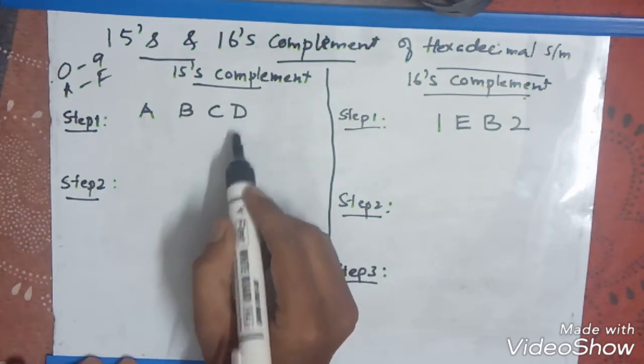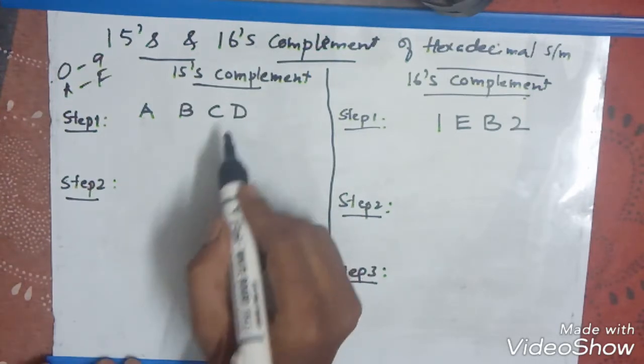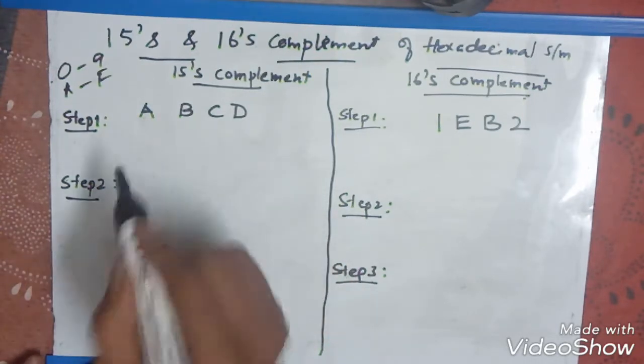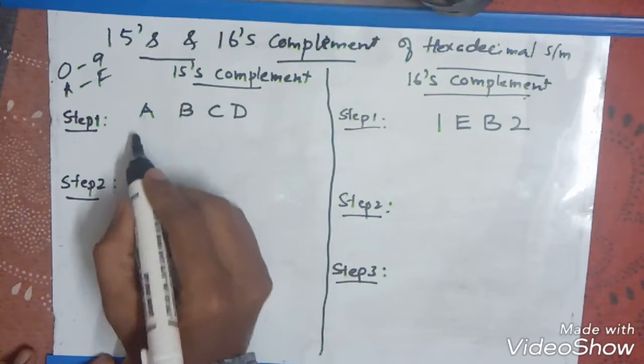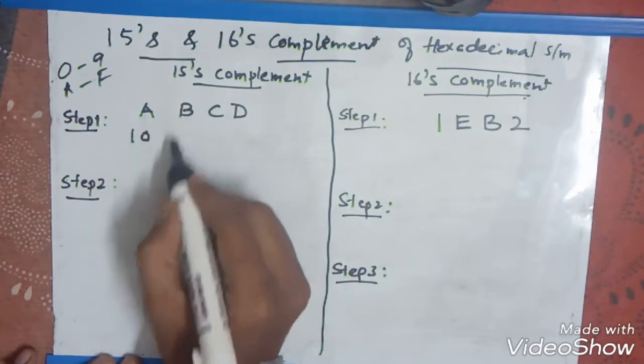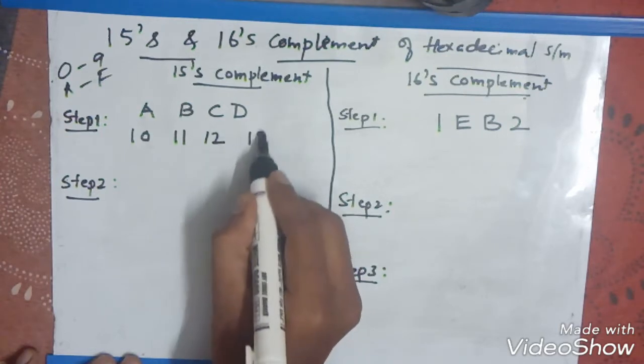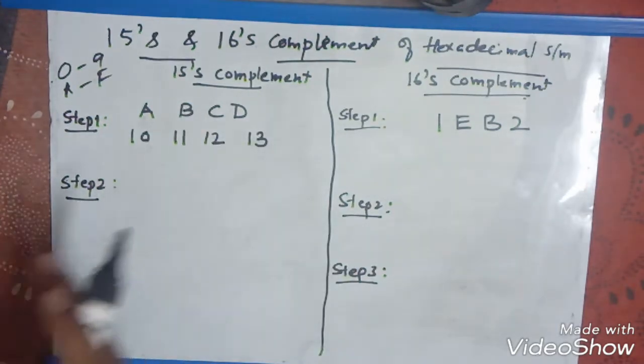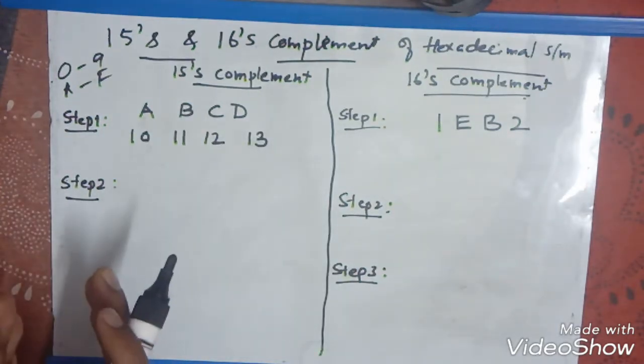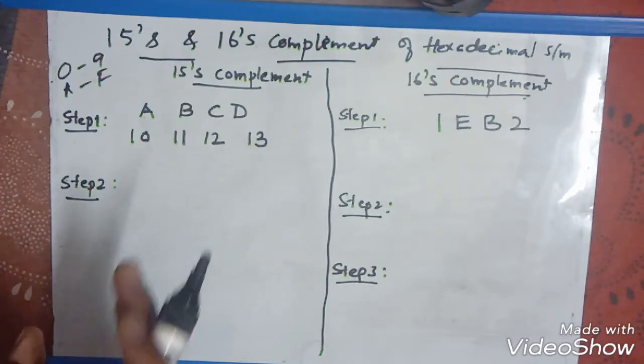D, first you have to convert it into a normal number. D indicates what? A indicates what? A is number which is nothing but 10. B is 11 and c is 12 and d is 13. Individually, you have to indicate it by the numbers at a, b, c, d.